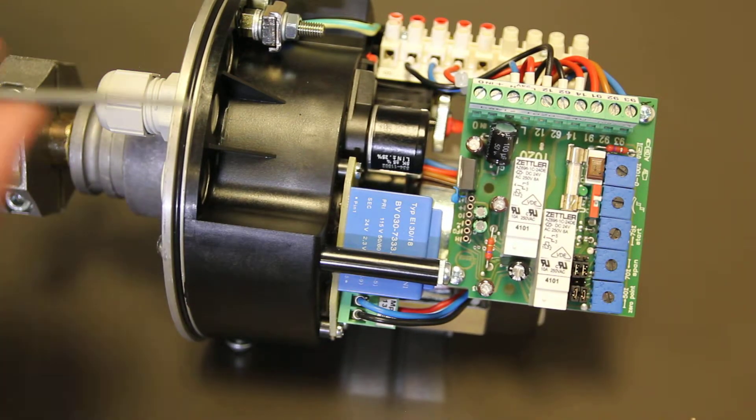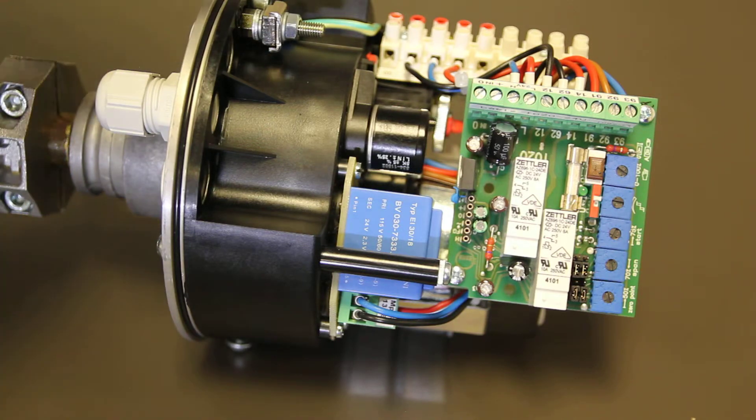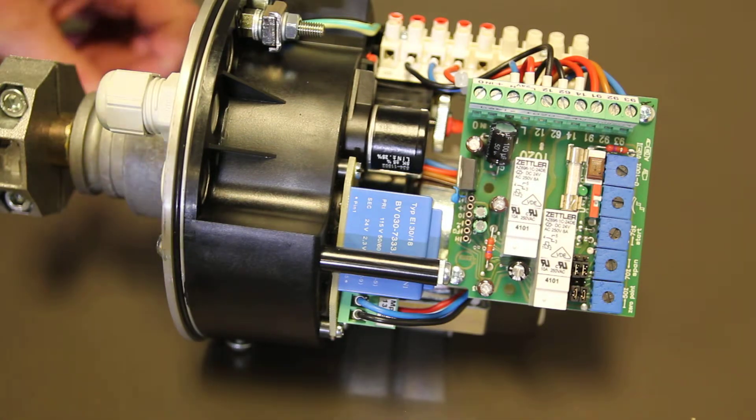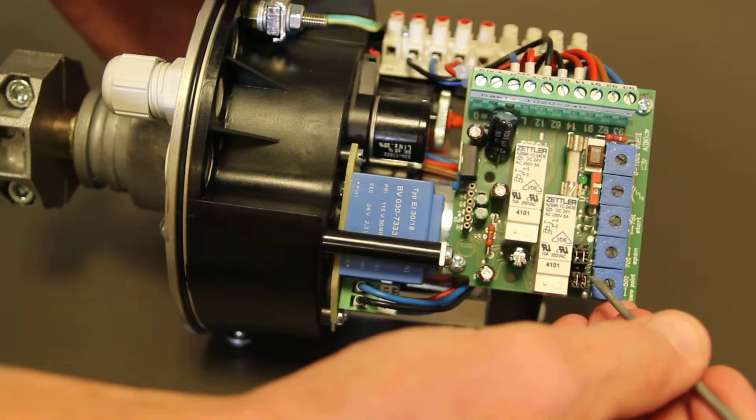We're going to get started here. You're going to need a very small flat head. You can use some needle nose pliers if you need. You want to be very careful here not to bend these posts.